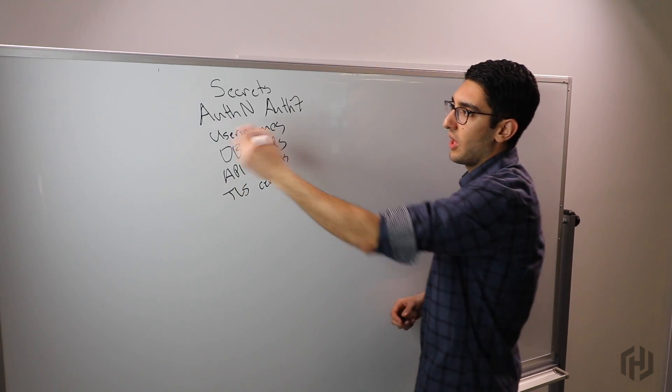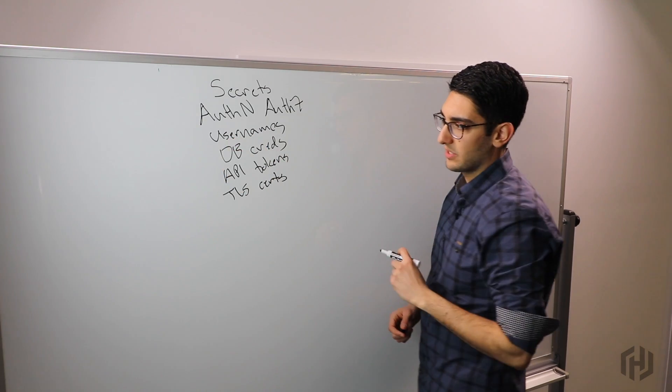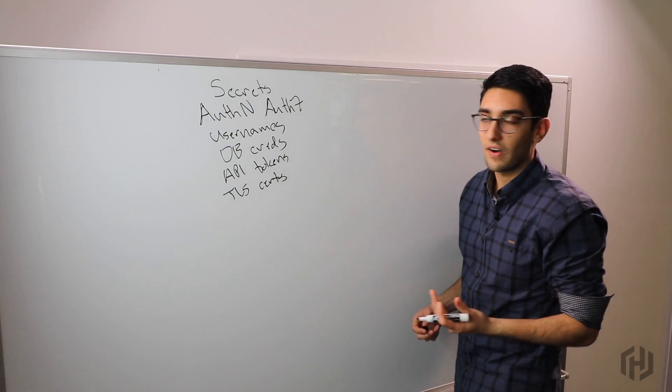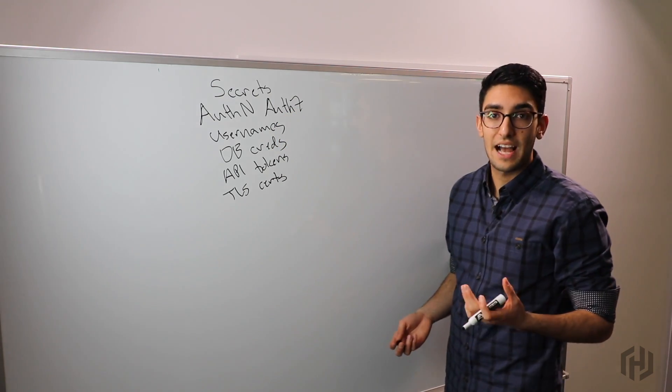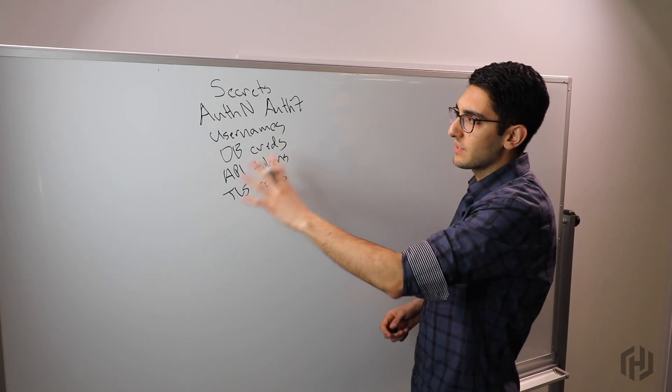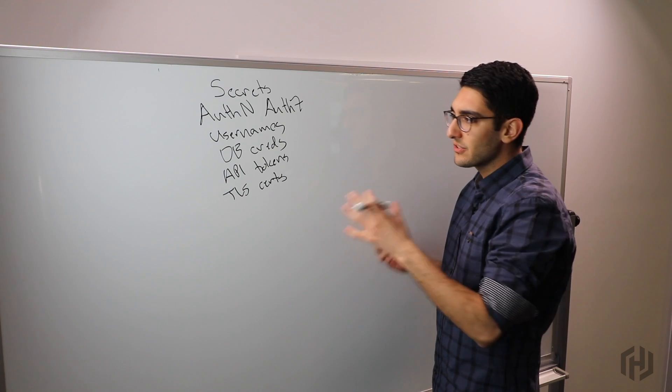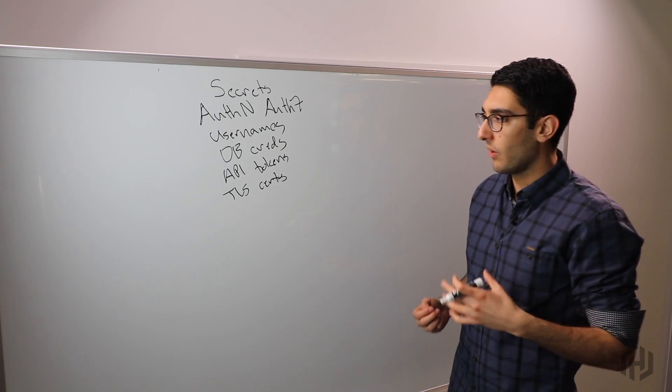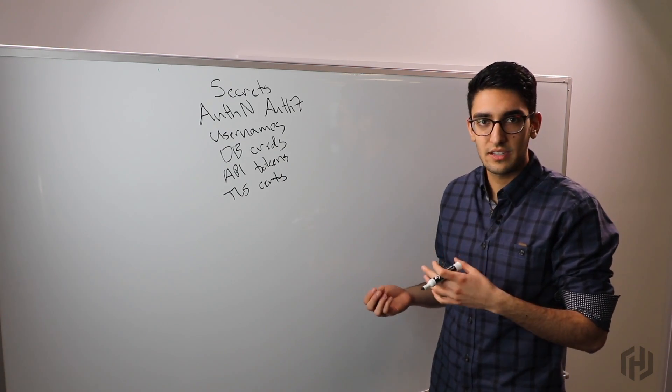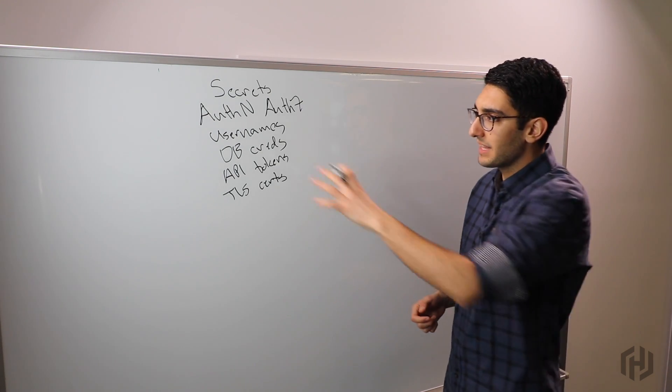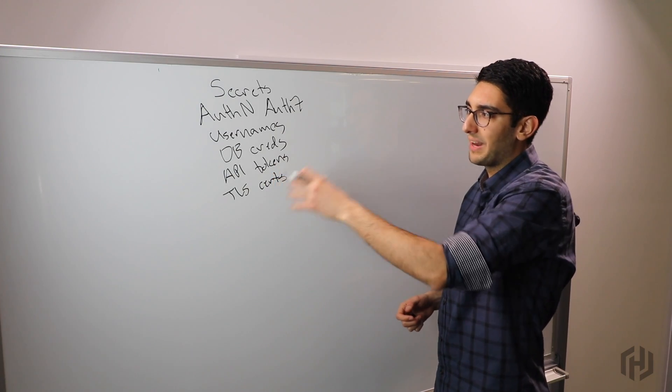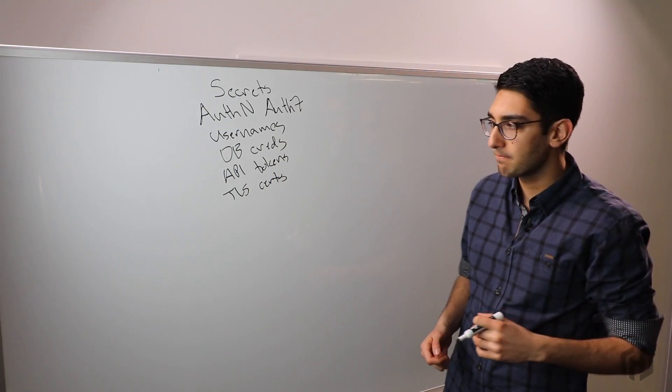We use these to either log into a system and authenticate, such as a username and password, or to prove our identity, like a TLS certificate. All of these things fall in the realm of secrets. We want to carefully manage them, understand who has access to them, who's been using them, and have some story around how we can periodically rotate them.